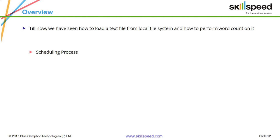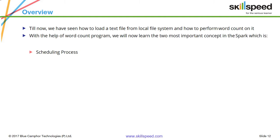So far in Spark we've seen how to load a file, apply a set of transformations and actions, and see the result. We were not really concerned about what is happening behind the scenes or about performance tuning. Let's have a look at these concepts. There are two major concepts: data dependencies and the scheduling process. Let's jump to the next slide and take the same example to understand this.